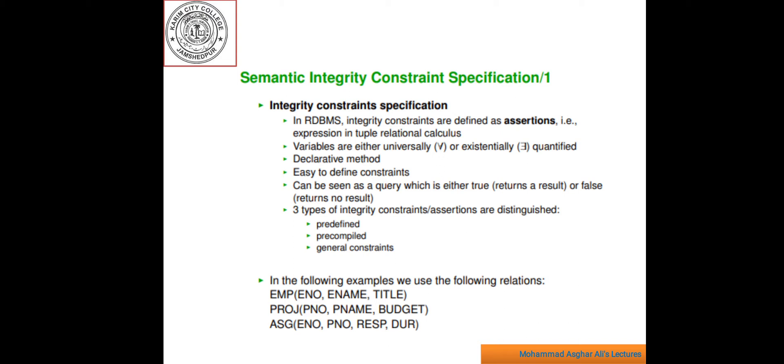Integrity constraint should be manipulated by the database administrator using high-level language. In relational database system, integrity constraints are defined as assertions. An assertion is a particular expression of tuple relation calculus in which each variable is either universally or existentially qualified. Thus, an assertion can be seen as a query qualification that is either true or false for each tuple in the Cartesian product of the relation determined by the tuple variables.